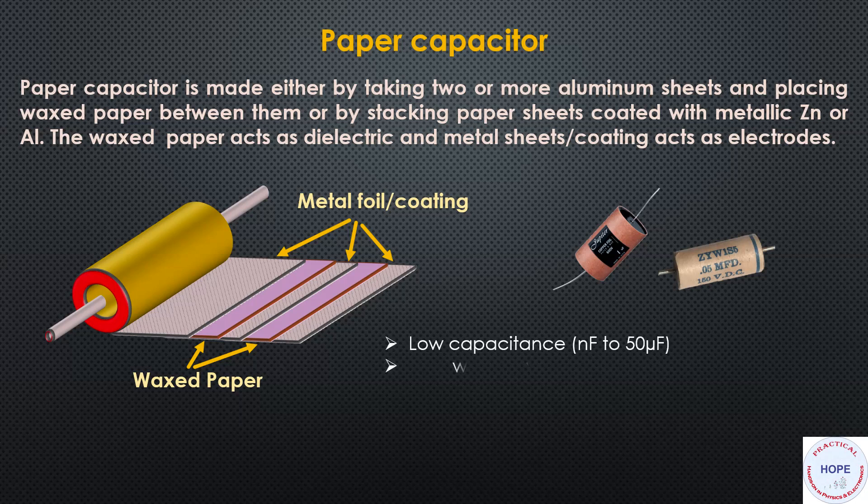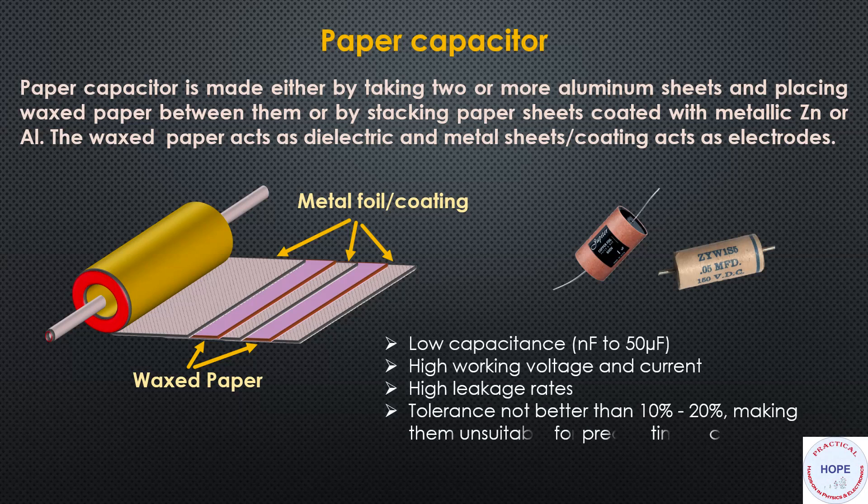Features of paper capacitors include: low capacitance values, high working voltage and current, high leakage rates, and tolerance not better than 10 to 20 percent, making them unsuitable for precise timing circuits.